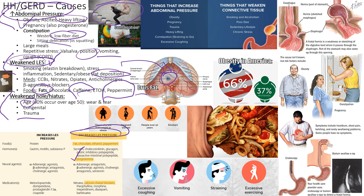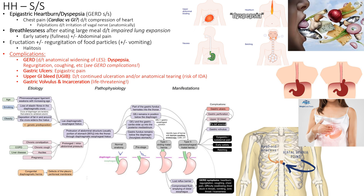Large meals increase intrathoracic pressure and push contents upward. Symptoms of a hiatal hernia overlap significantly with GERD since stomach acid washes up against the lower esophagus. The fancy term for heartburn is dyspepsia. Patients also experience chest pain — important to differentiate from cardiac chest pain since cardiac pain is more serious.